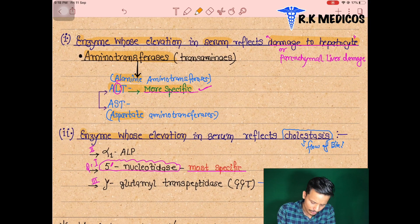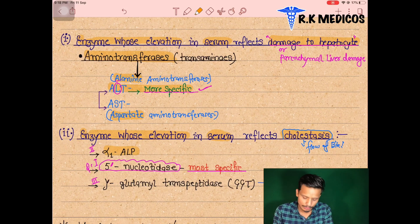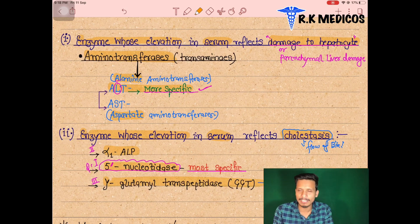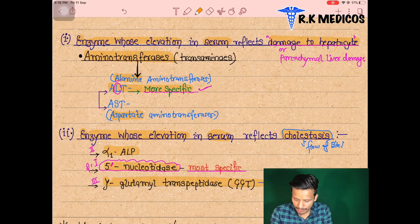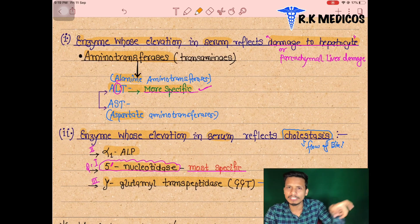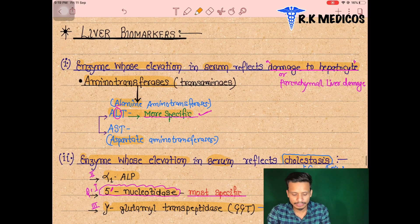If elevation of enzymes in the serum reflects cholestasis — meaning the flow of bile is very slow — the biomarkers indicating this are ALP (alkaline phosphatase), biliary canaliculi enzymes, 5'-nucleotidase (which is the most specific for cholestatic representation), and gamma-glutamyl transpeptidase (GGT). These enzymes indicate elevation when the patient has biliary canalicular disease or cholestasis. For markers of alcoholism — acute alcohol abuse or alcoholic liver disorder — 5'-nucleotidase, ALP, and GGT are the indicators.